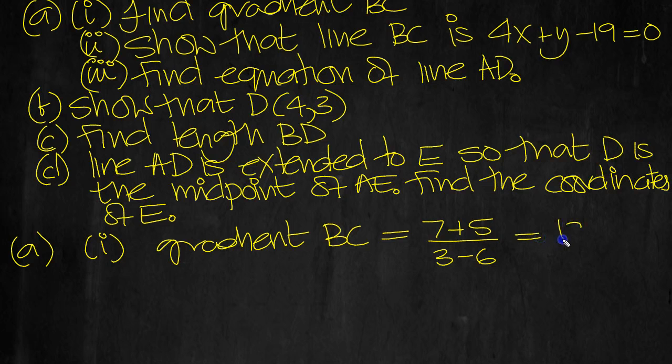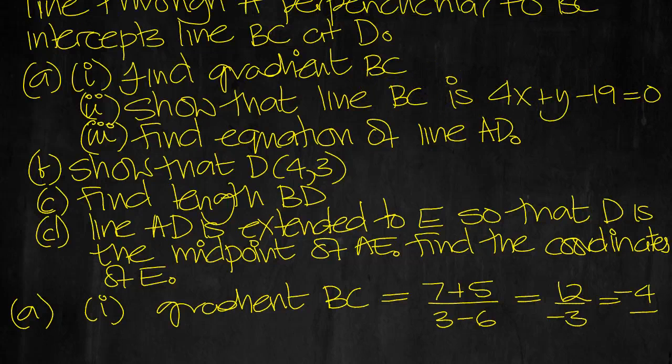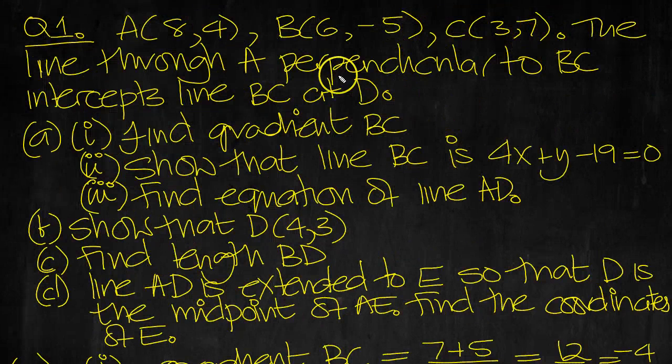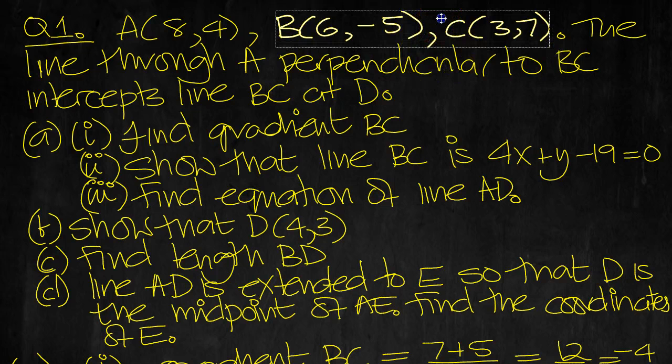Divided by the increase in X, 3 minus 6. So that's 12 over minus 3, which is minus 4. So that's the gradient BC then. Part 2, show that the line BC is this. So here's B and C.